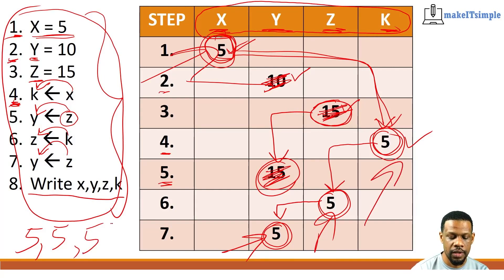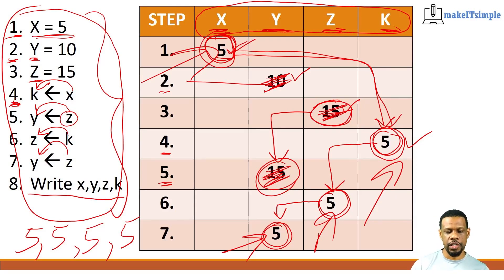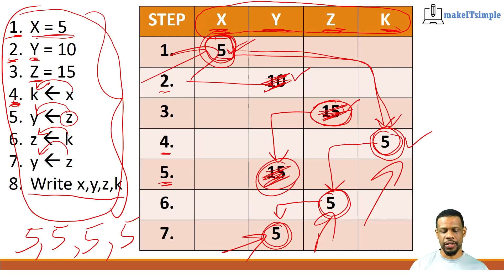So it's five, five, five, five — that is a sequential trace table, the most basic of them all. It's highly unlikely they'll give you this on an exam because it's just a stepping stone, but if they do, you should smile and move on.